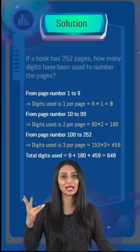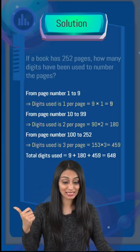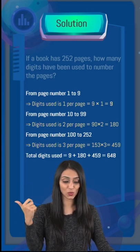Similarly from page number 10 to 99, 2 digits are used per page, so that's 180. Similarly from 100 to 252, it's going to be 459.